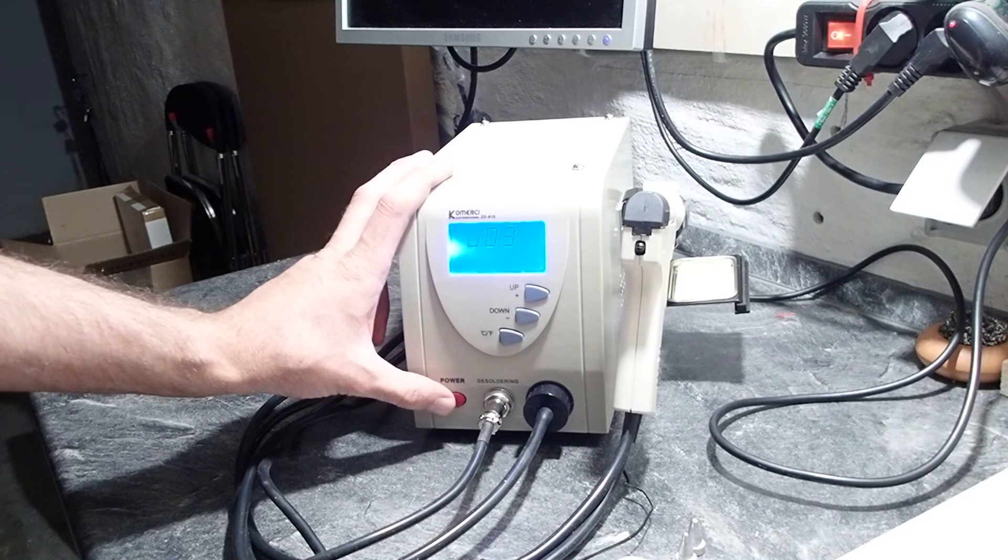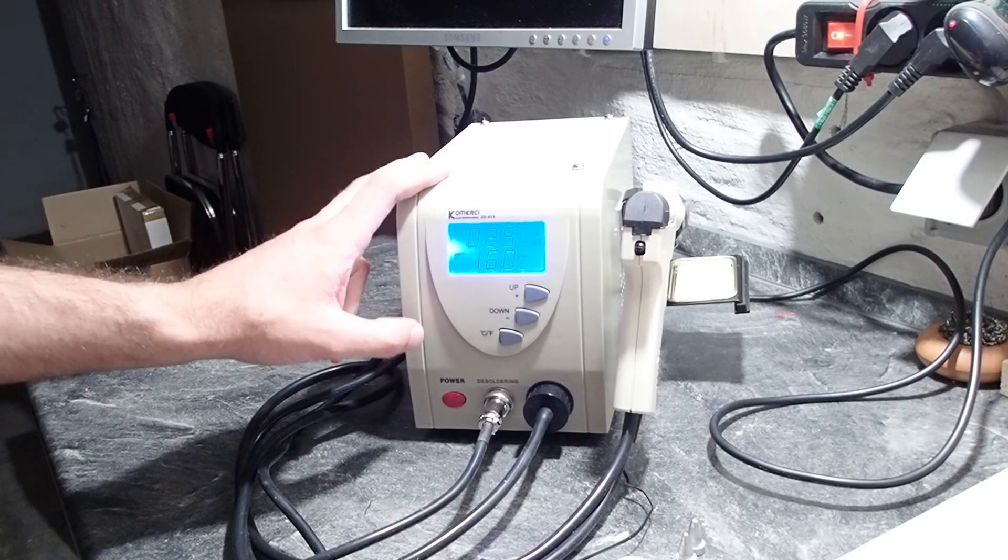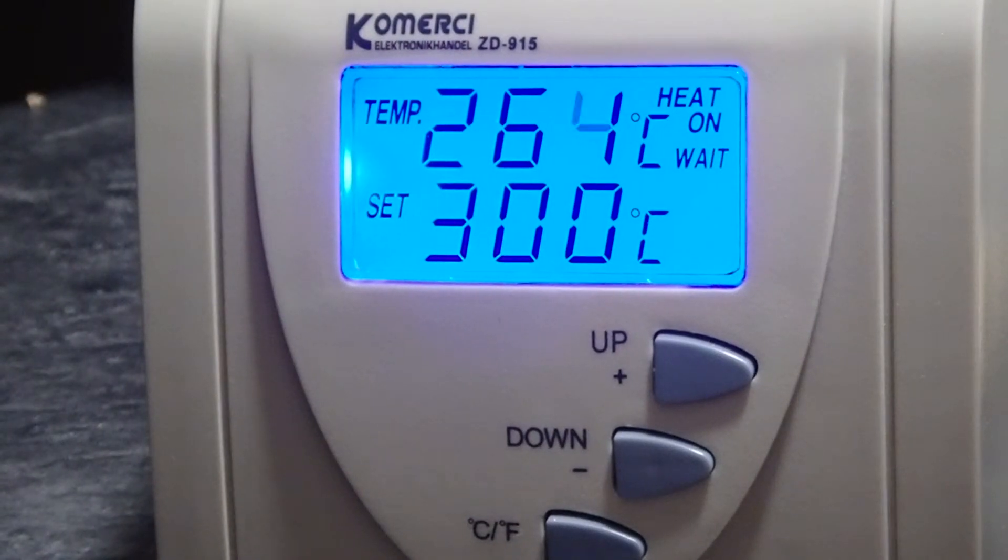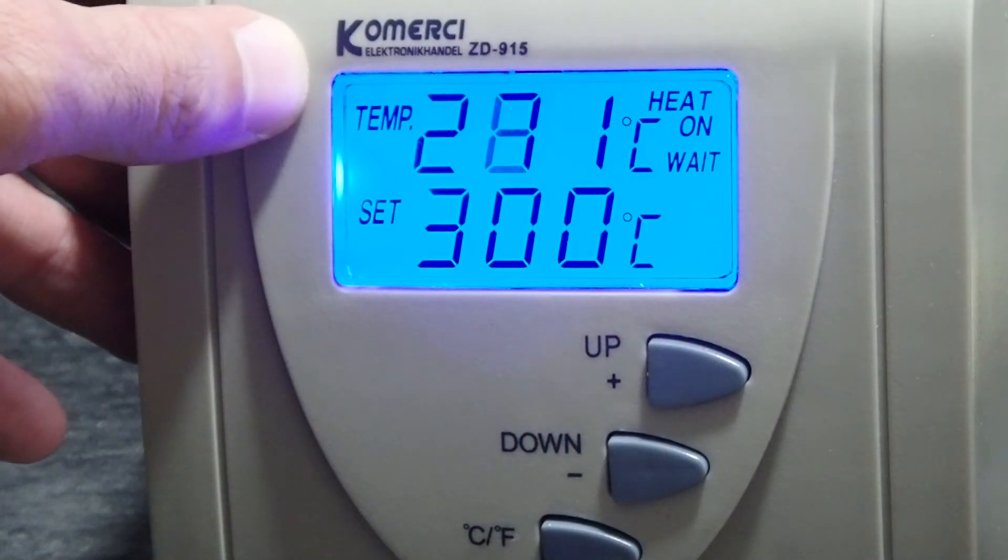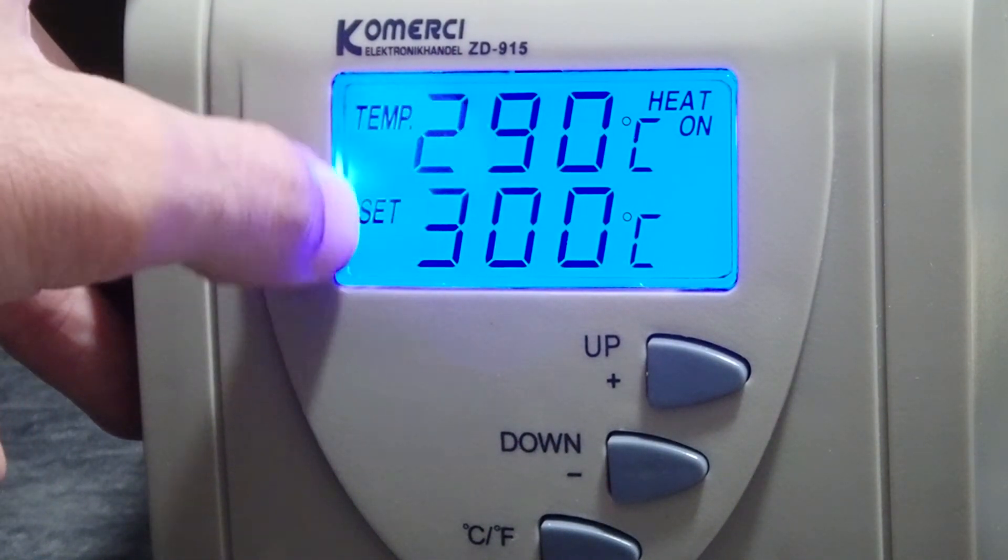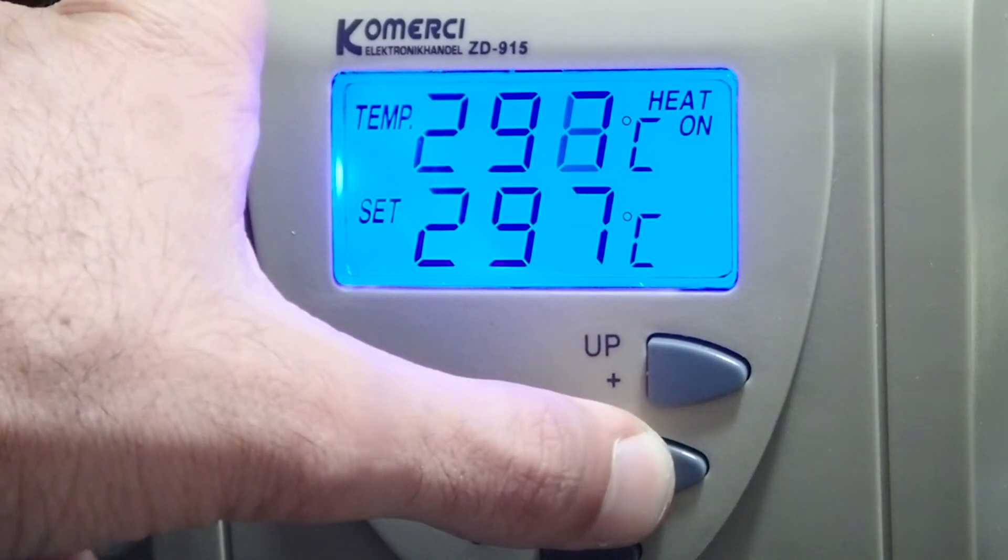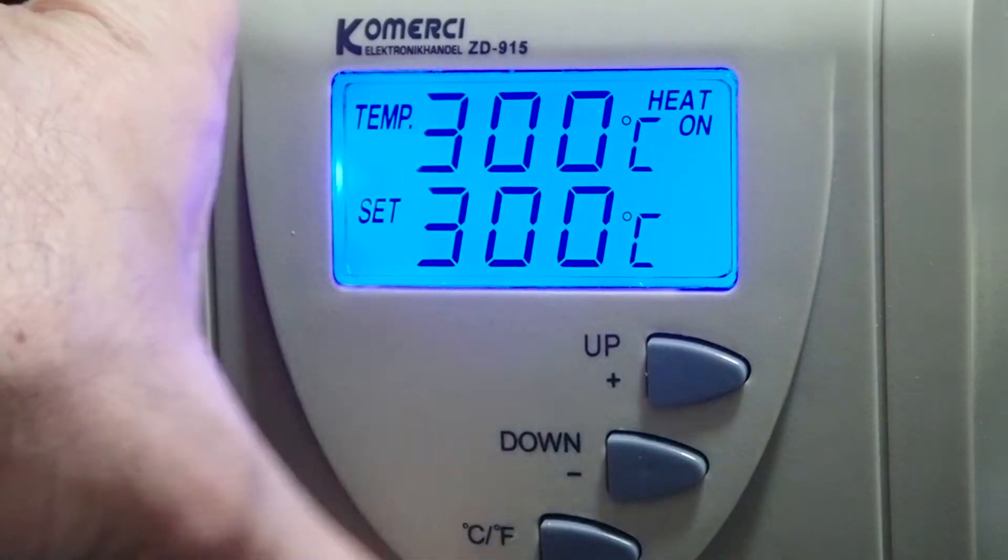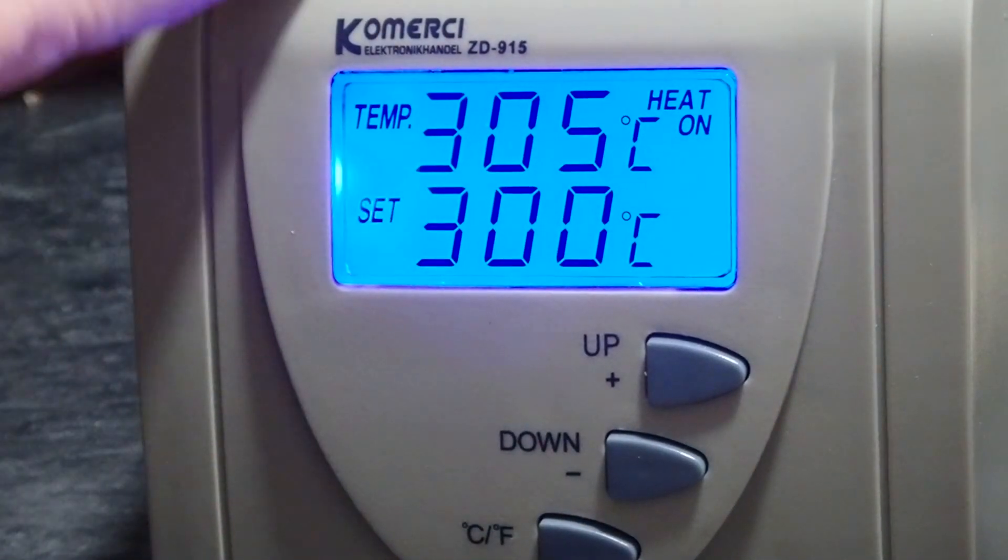It's loud. It's quite loud. So on the screen on top we have a current temperature and on the second row we have a desired temperature, and you can use up and down buttons to set up the desired temperature. You can switch between Fahrenheit and Celsius for the screen.